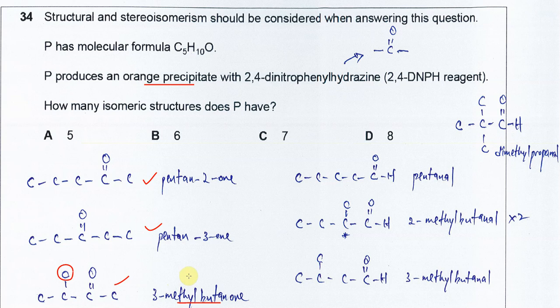And it can form aldehyde also. So longest carbon chain, 5 carbons, so it can form pentanal, this one. Or it can form 2-methylbutanal, 4-carbon main chain. This is first carbon, this is second carbon, so it's 2-methylbutanal.